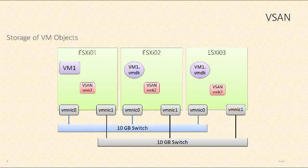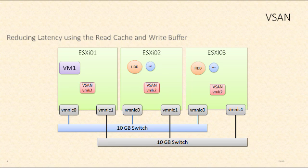This is where our storage policy comes in — we govern how many mirrors and stripes of these virtual machine objects should exist. For example, if you want VM one to tolerate more than one host failure, you could mirror it to additional hosts, which will consume additional space. You can configure those storage policies based on whatever your priorities happen to be. From a performance perspective, performance should come from the flash layer that exists within our disk groups.